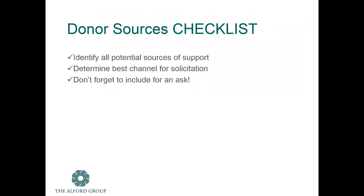So a very simple donor sources checklist: identify all the potential sources of support that might be relevant to your organization, whether or not you have a robust program targeting that particular source. For each source, and then within those sources each potential donor, determine the best channel for solicitation. And don't forget to include those organizations in an ask — too often we have organizations on our mailing list but they don't even get asked because we're reserving them for some other special project.